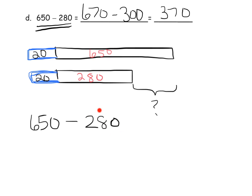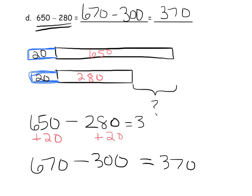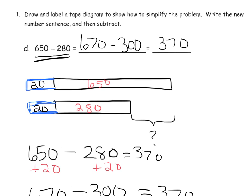Well, 280 is almost a milestone number. So if we add 20 to both numbers, we end up getting 670 minus 300. So this answer is 370. So this answer is 370. That's another way that we could show how to use the associative property to subtract.